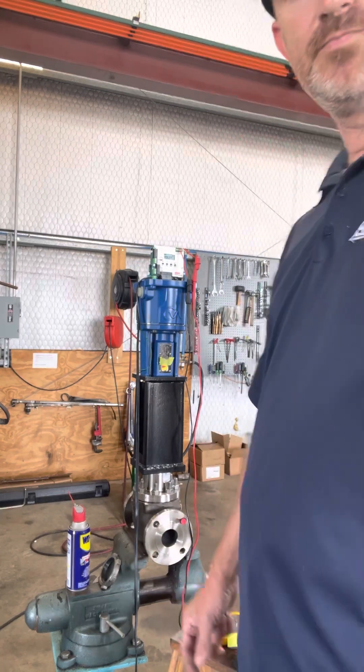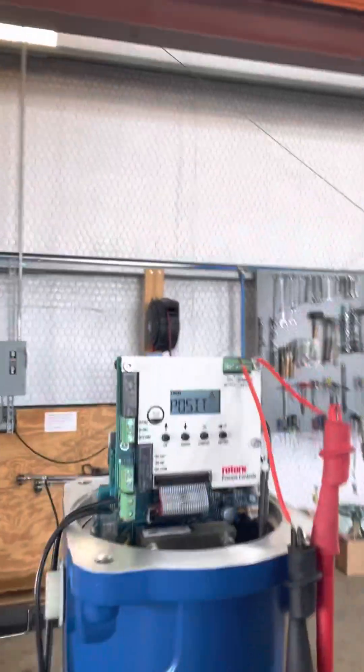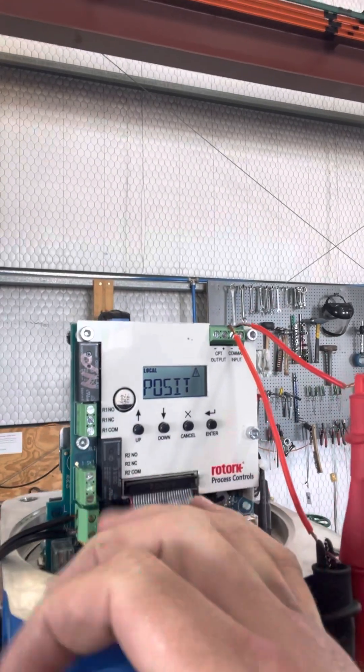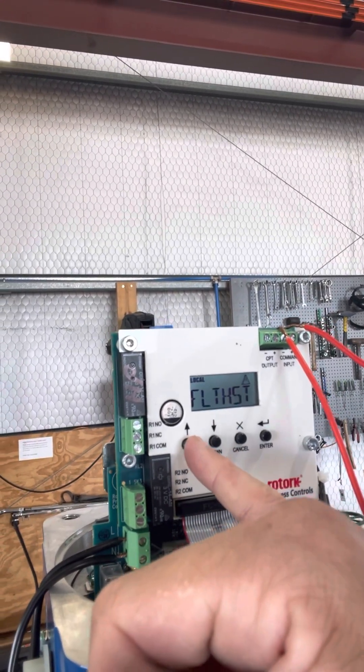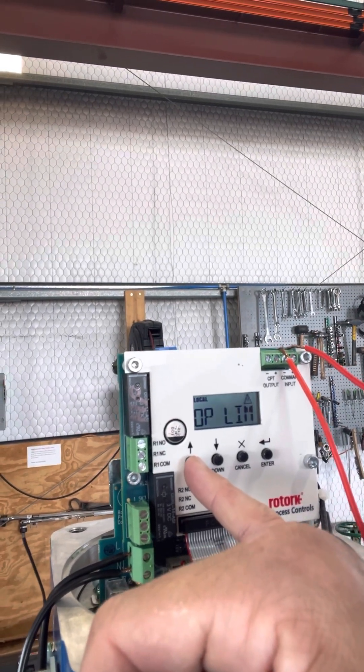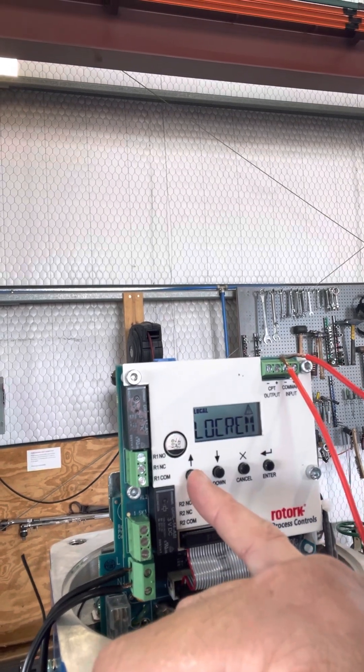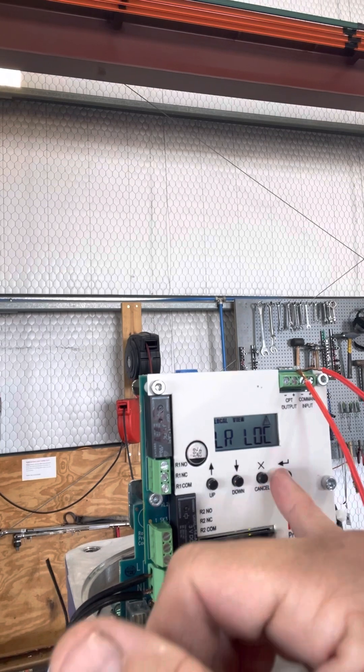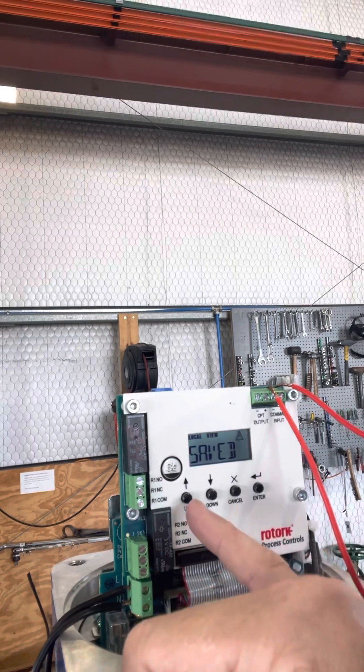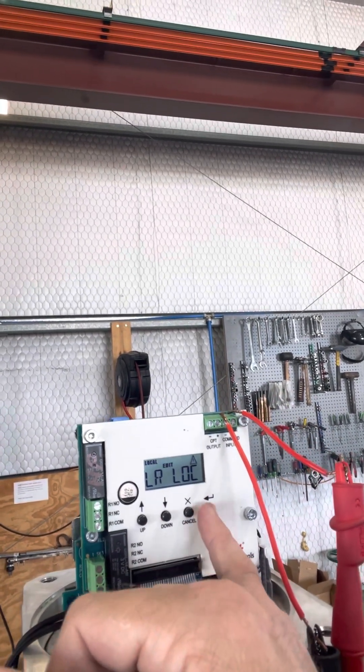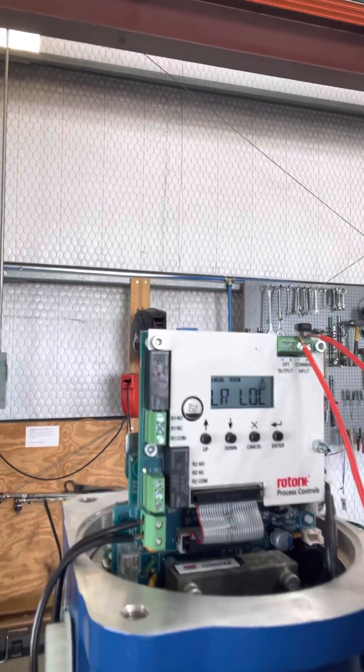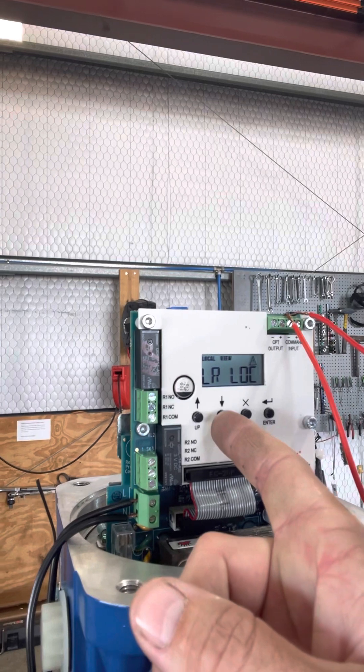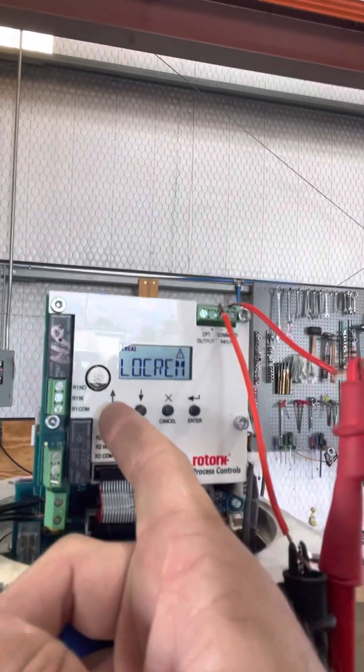All right, so what we have here is all of the settings. Now we got to go into the first thing you do is you set it to local control. So you got to find it, it says local remote. You got to hit enter. You'll see wait for it to save. But when you get to it, you got to hit enter and go into edit. And then once you go into edit, then you can change it and then hit enter again and it'll save.